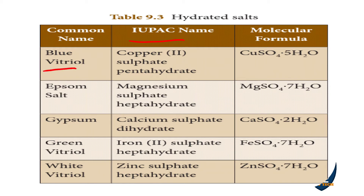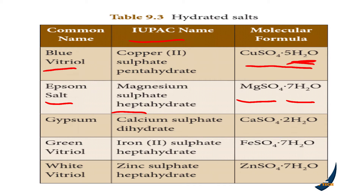The hydrated salts with their common names, IUPAC names, and molecular formulas are: Blue vitriol — copper sulfate pentahydrate — CuSO₄·5H₂O. Epsom salt — magnesium sulfate heptahydrate — FeSO₄·7H₂O. Green vitriol — iron sulfate heptahydrate — FeSO₄·7H₂O. White vitriol — zinc sulfate heptahydrate — ZnSO₄·7H₂O. These can be asked in one-mark or two-mark questions.